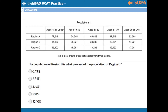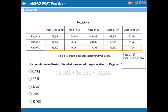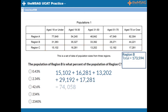The next question: the population of region B is what percentage of the population of region C? How much easier is this question going to be because we jotted down the total population of region B? Instead of scrambling to recalculate it and risk making mistakes with the calculator in the rush, we can now calmly work out the total population of region C by adding each of its age categories, which gives us a total of 74,058.